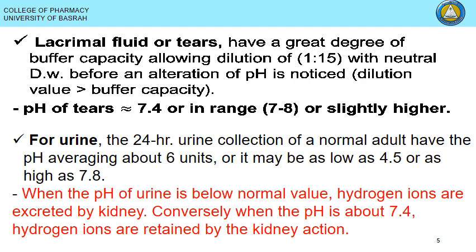Urine also has a biological buffer, but it is weak, ranging from pH 4.5 to 7.8. A urine pH below 4.5 indicates the kidney is secreting more acid and more hydrogen ions. A urine pH above 7.8 indicates the kidney is retaining acid inside the body, preventing excretion of excess acids. These findings have clinical significance in urine analysis.